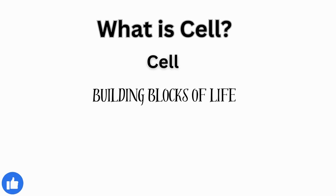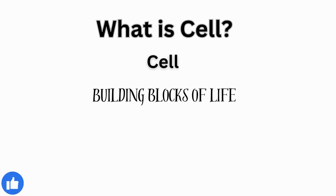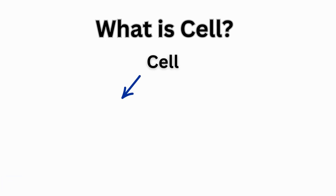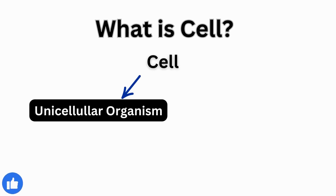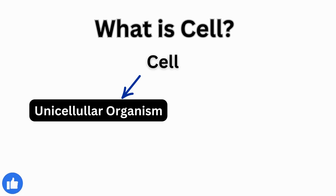the fundamental units that make up all living things, from simple single-celled organisms to complex multicellular organisms like plants, animals, and humans. Unicellular organisms consist of a single cell that can carry out all life processes independently.